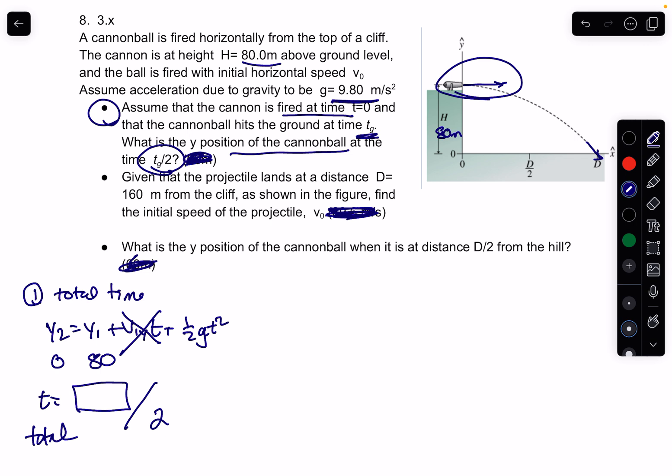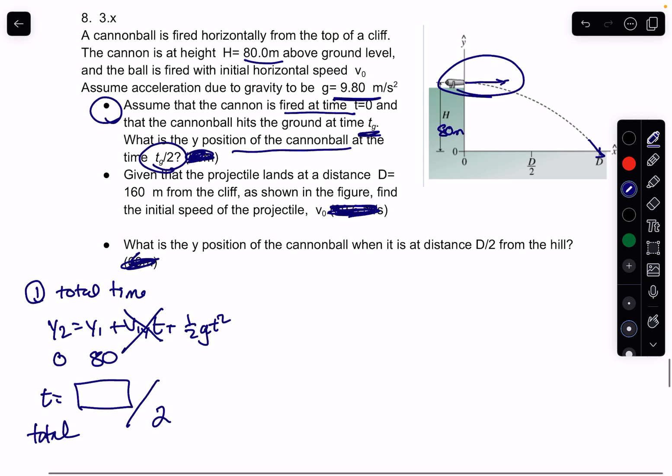And it's asking for what is the height, right? What is the y position? So then you're going to just plug into this equation. So to really answer the first bullet, you're going to say, again, y2 equals y1 plus 0, right?